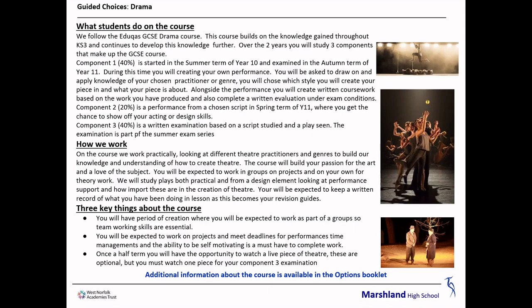The exam is broken up into three components. Component 1 is worth 40% and it starts in the summer term of Year 10 and is examined in the autumn term of Year 11. During this time you will create your own performance, drawing on your knowledge of practitioners and genres that you have studied, choosing your favourite and using the exam syllabus to create your own work.